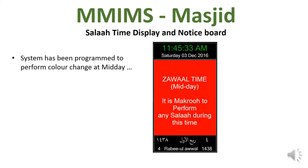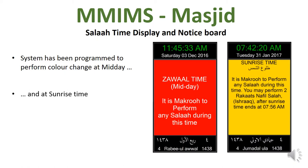The system has been programmed to perform colour change at midday. So at Zawal time, the colour of the screen changes to red and remains like this for the duration of Zawal time. Similarly, at sunrise time, the screen changes to yellow and remains like this for the duration of sunrise. After this time has finished, the screen will return back to its normal display.